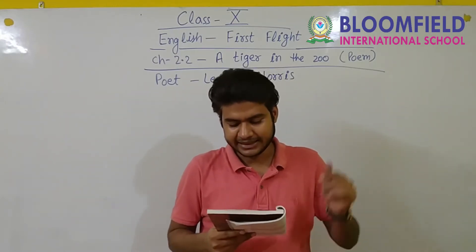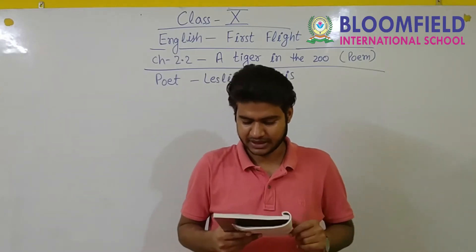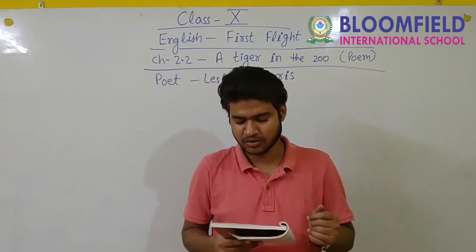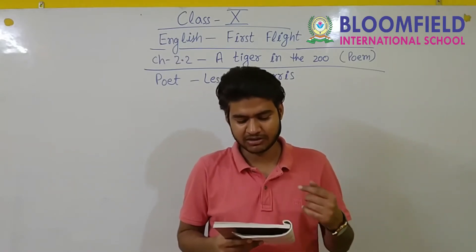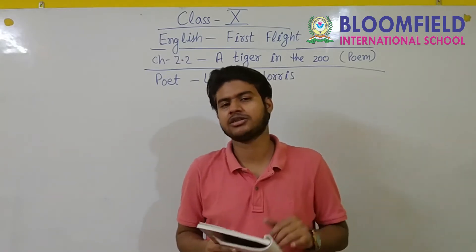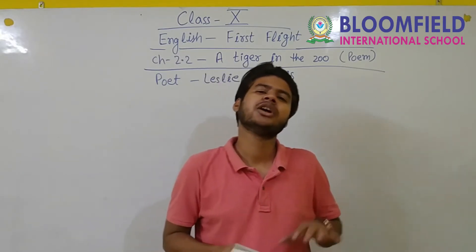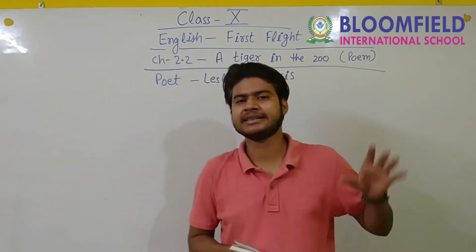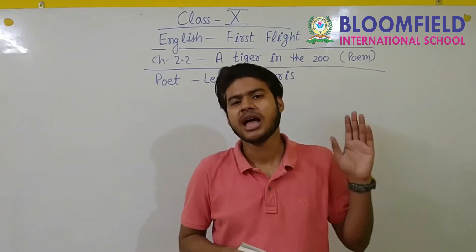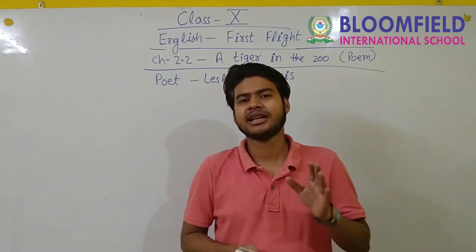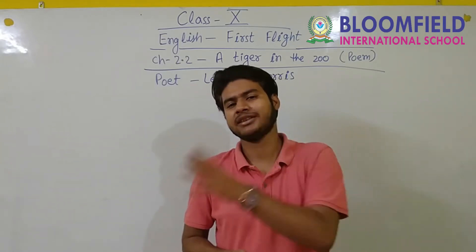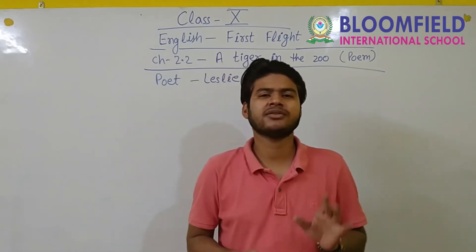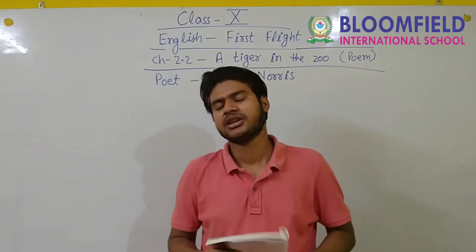Read the poem silently once and say which stanzas speak about the tiger in the zoo and which ones speak about the tiger in the jungle. By reading we have to find out which stanza tells you about the tiger being in the zoo and which one tells that the tiger is in the forest. So that was the description given at the top of the page.